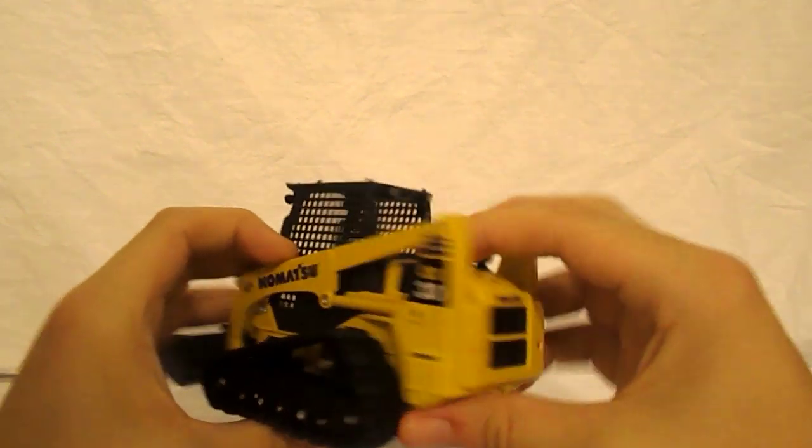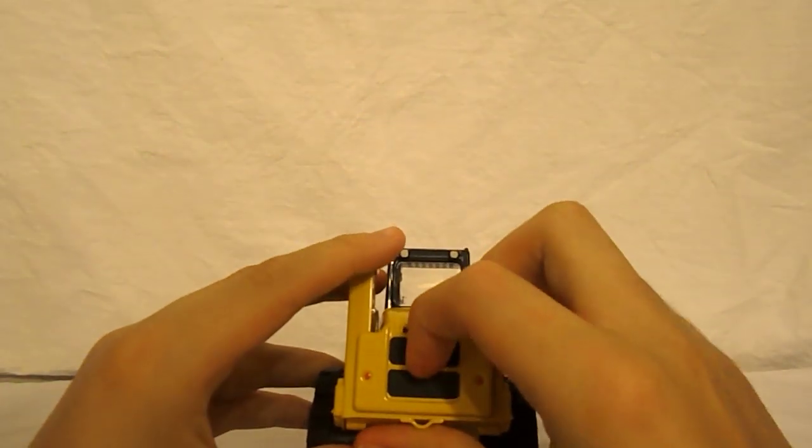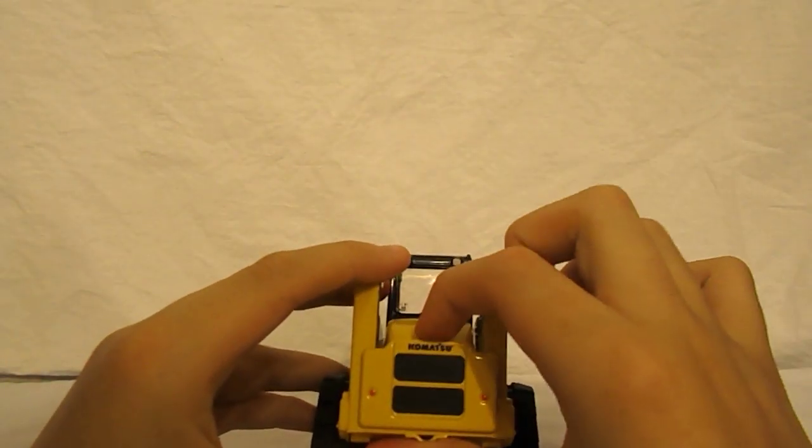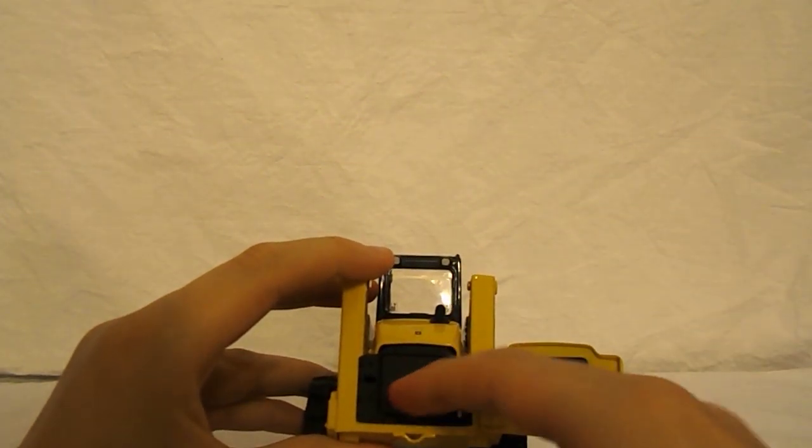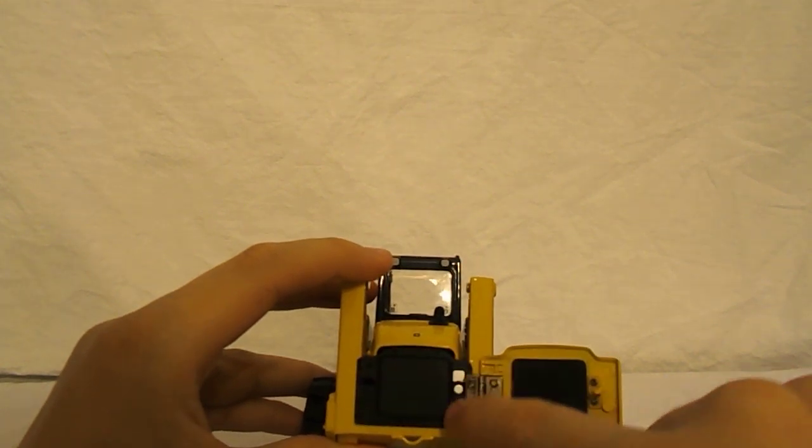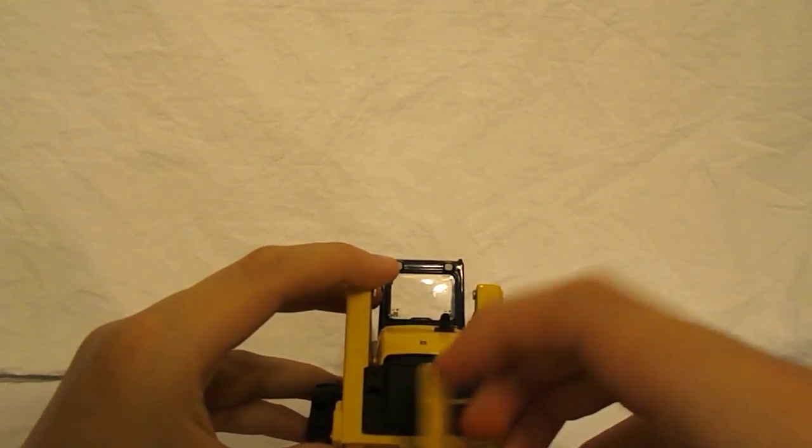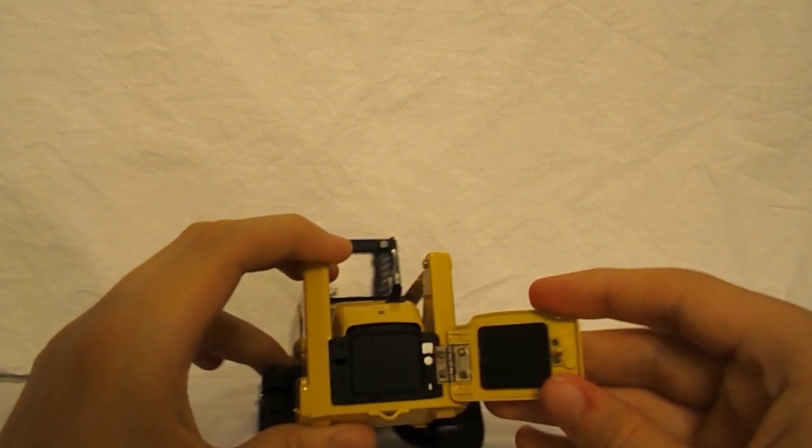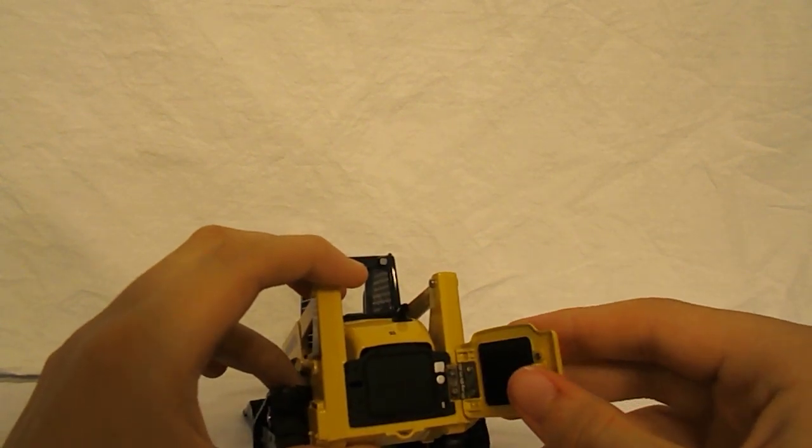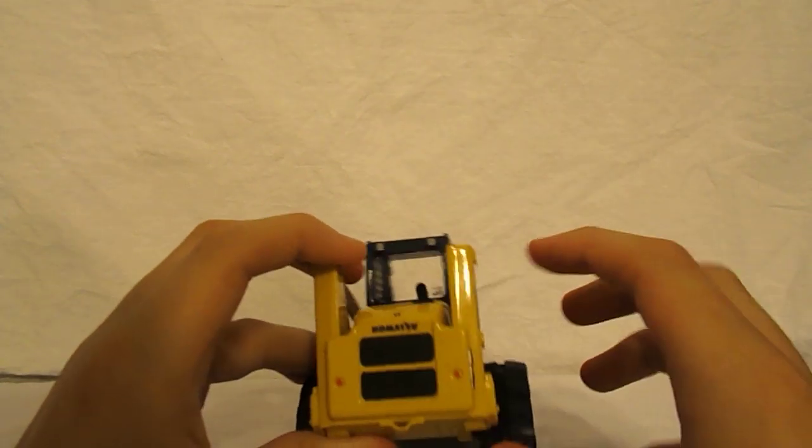On the back, you have your grill, and two taillights, and a hitch, and this door does open, revealing the radiator, and some good rivet detail. And it just clicks shut, but you have to be careful right here, because this latch is plastic, and it can break, which is bad.